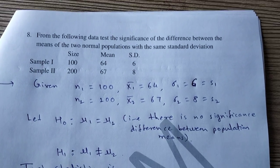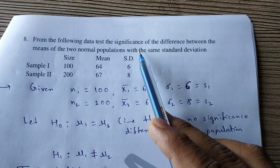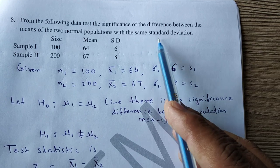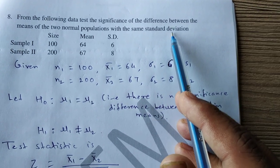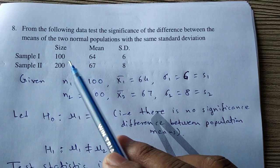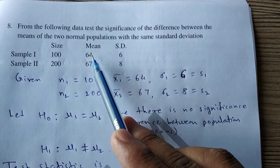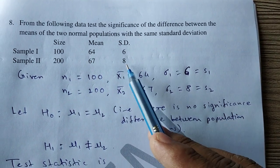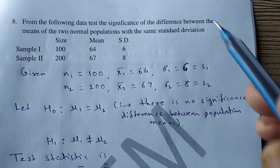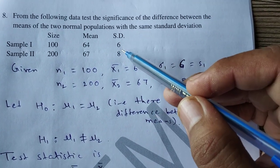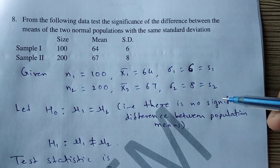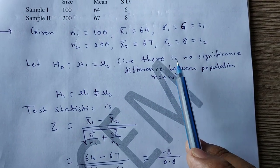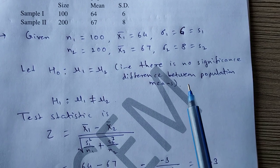Now the second example: test the significance of the difference between means of two normal populations with the same standard deviations. Sample 1 has size 100, mean 64, and standard deviation 6. Sample 2 has size 200, mean 67, and standard deviation 8. Note that here the standard deviations of the samples are given, so we will use s1 and s2.